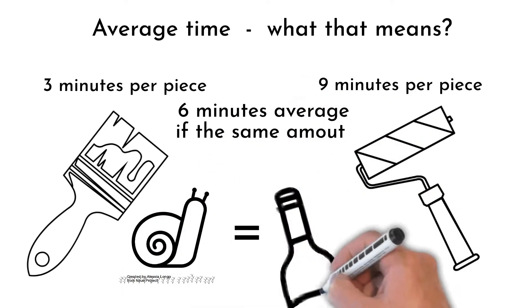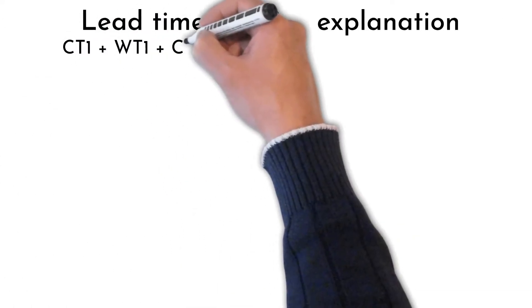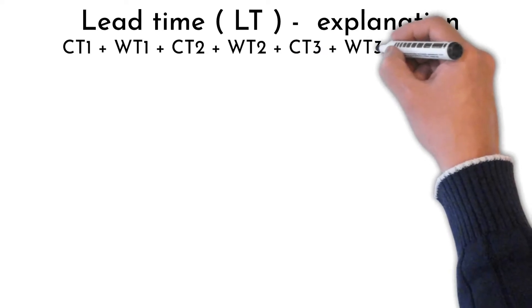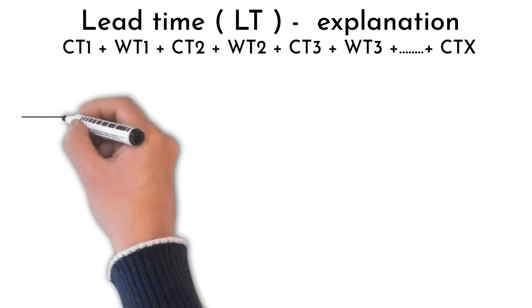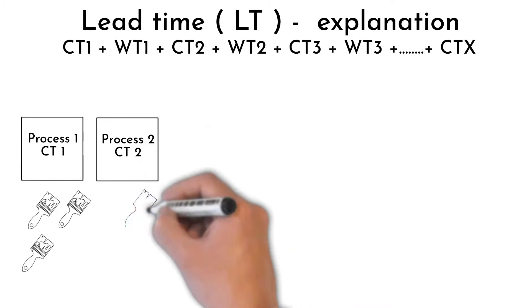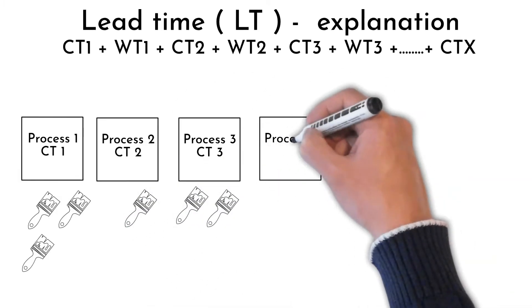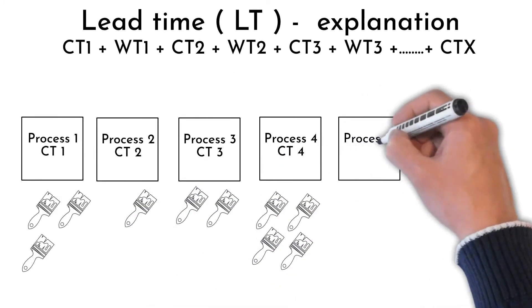Lead time is an addition of all cycle times and waiting times from all processes product is going through. Let's say there are six different processes each with cycle time, but there are products waiting to be processed on some stations. These times must be counted with to the lead time.